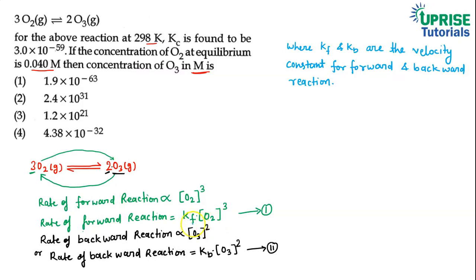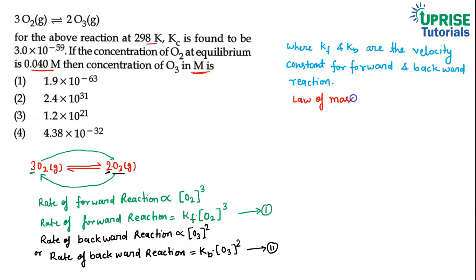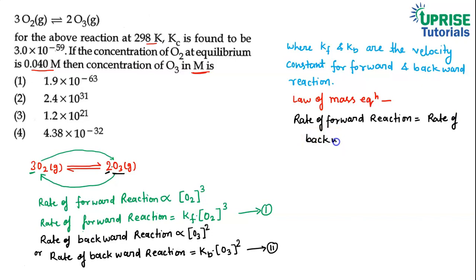Here kf is the velocity constant for the forward reaction and kb is the velocity constant for the backward reaction. According to the law of mass action, at equilibrium the rate of forward reaction equals the rate of backward reaction.